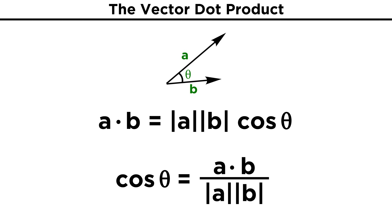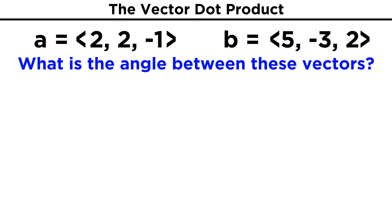This is one of the reasons the dot product is useful, as it gives us a great way to calculate angles without doing any trigonometry. Let's give it a try, what is the angle between vector A with components two, two, negative one, and vector B with components five, negative three, two?